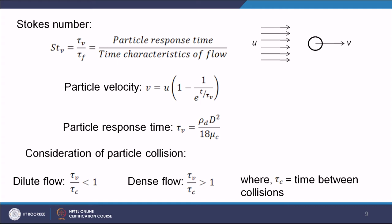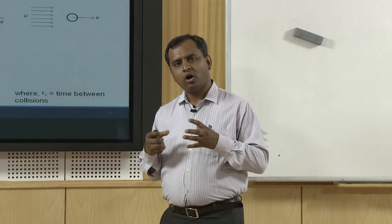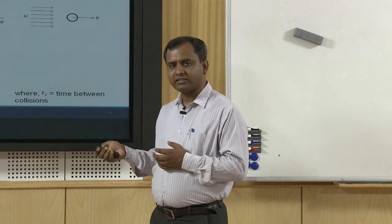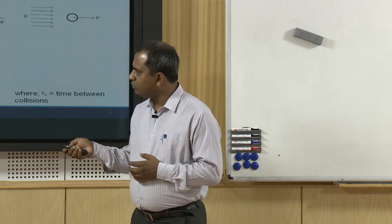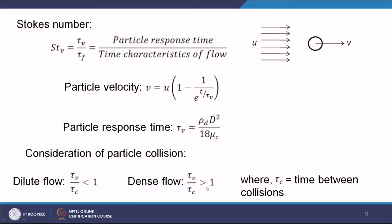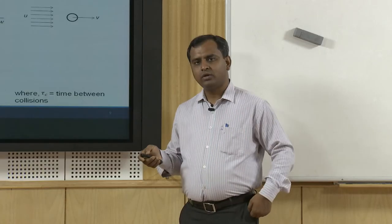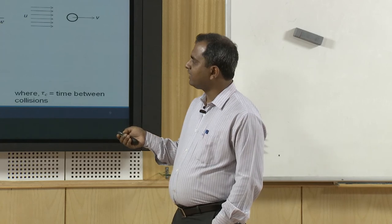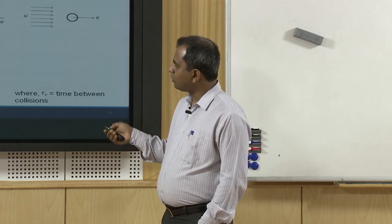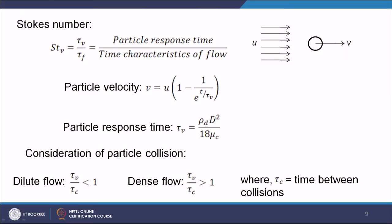In monodispersed flow, the gas-solid flow is characterized as either dilute or dense depending on particle packing. When τ_v/τ_c < 1, we have dilute flow, and when τ_v/τ_c > 1, we have dense flow, where τ_c is the collision time between particles. The Stokes number and particle response time — obtained from the physical properties of the gas-solid flow — together determine the relationship between particle velocity v and gas velocity u.